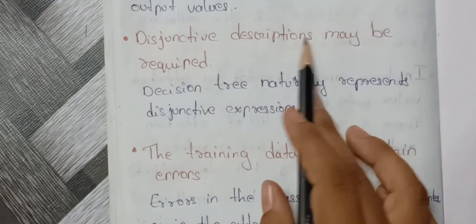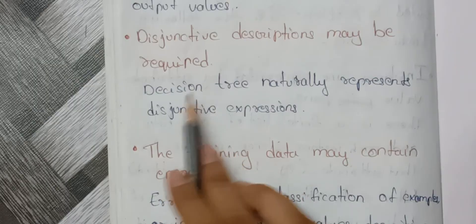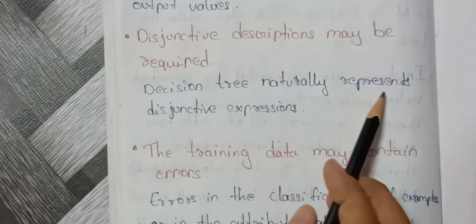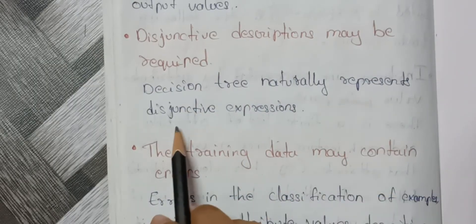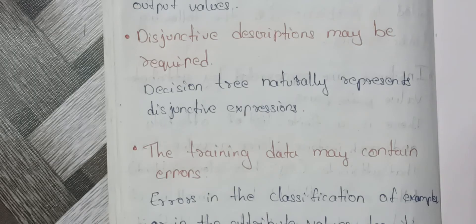Third characteristic: disjunctive descriptions may be required. Decision trees naturally represent disjunctive expressions. The opposite of disjunctive is conjunctive.